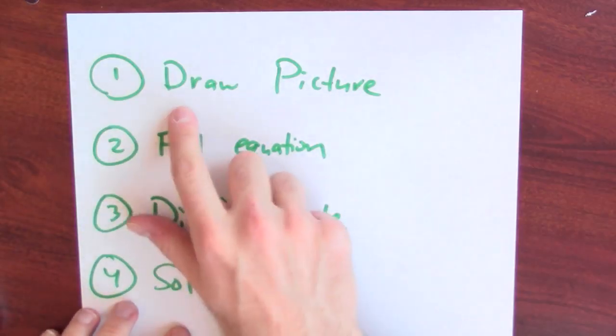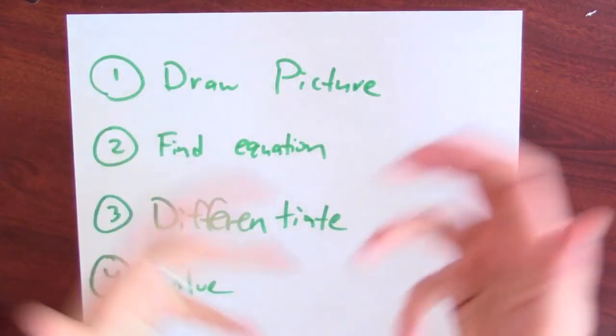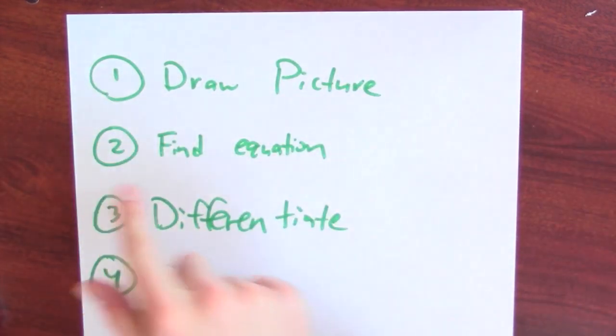There's a standard method to solving a related rates problem. There's four steps. So, step one is draw a picture, right? You're told some sort of story.